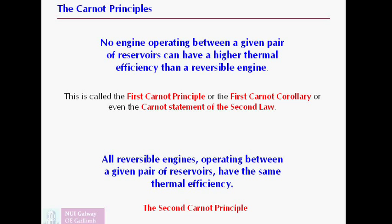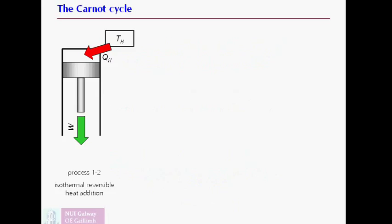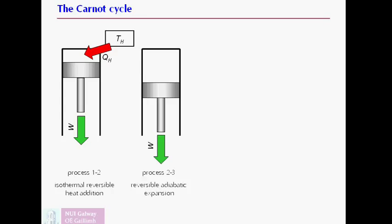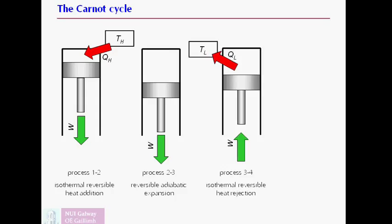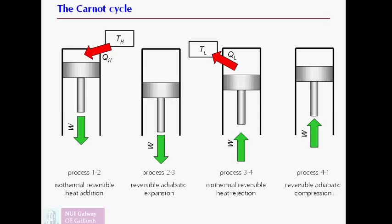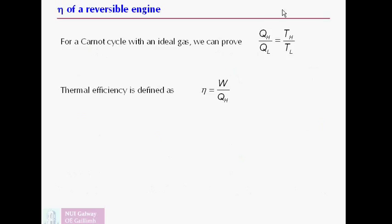And Carnot went further than this. He considered a very specific reversible heat engine, which we now call the Carnot cycle. It uses an ideal gas as the working fluid. It goes through a series of heat transfer and work processes, receiving heat from a high temperature reservoir, rejecting heat to a low temperature reservoir. It's an impossible engine to build, but it's quite an easy engine to analyze. And the analysis is done in every textbook. I'm not going to go through it in detail here.